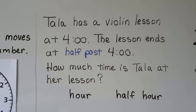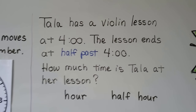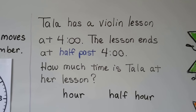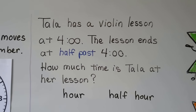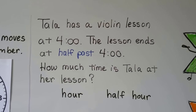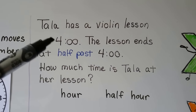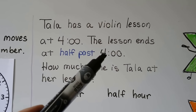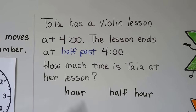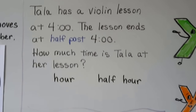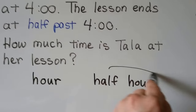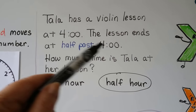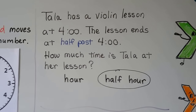Tala has a violin lesson at four o'clock. The lesson ends at half past four o'clock. How much time is Tala at her lesson — is it an hour or is it a half hour? Well, it started at four o'clock and it ended at half past four. That's a half hour. It still says four o'clock, it's just half past it, so it's a half hour.